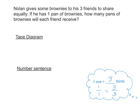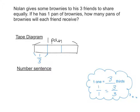Now Nolan still wants to share brownies with his three friends, but this time he only has one pan of brownies. For the tape diagram, we only have one pan of brownies and he has to share it equally amongst three people, so each friend gets one third of a pan. The number sentence: one pan divided by three. Based on what we know about fractions, that equals the numerator over the denominator — each friend will get one third of the pan.